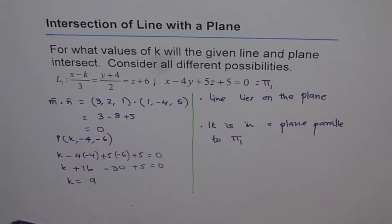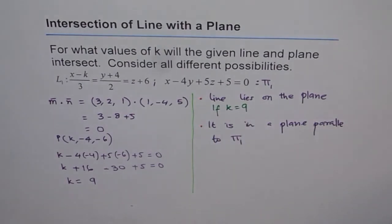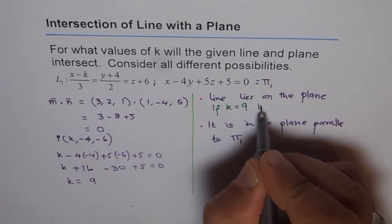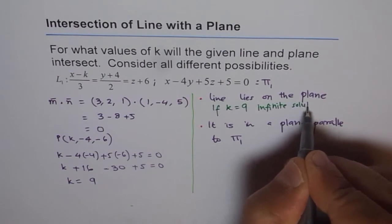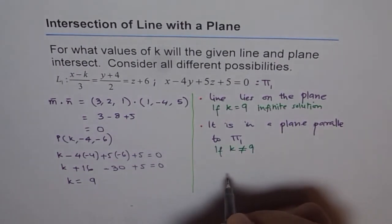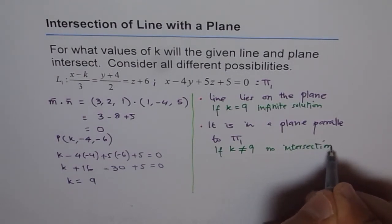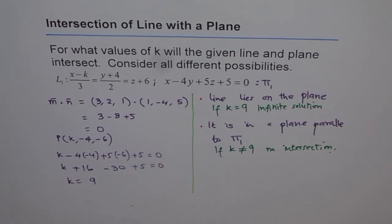So we can conclude: if k = 9, the line intersects the plane infinitely — the solution is infinite, since the line is contained in the plane. But if k ≠ 9, then the line does not intersect the plane — there is no intersection, since the line lies on a parallel plane. These are the two possibilities: the line cannot intersect this plane at a single point, since the dot product is 0. Thank you.